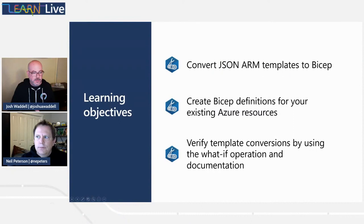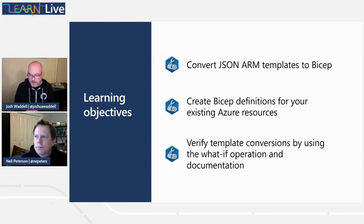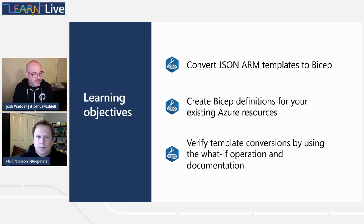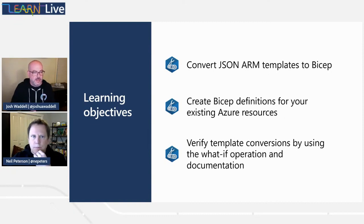In terms of the learning objectives: we're going to talk about converting JSON ARM templates over to Bicep, creating Bicep definitions for existing resources, and verifying those template conversions using the what-if operation and documentation. Some of the concepts we'll cover today have been covered before in previous episodes, including the what-if operation from last week.